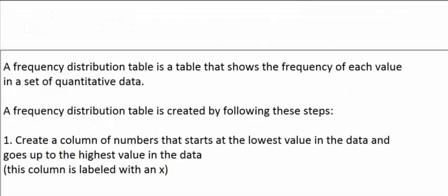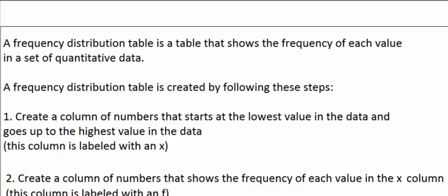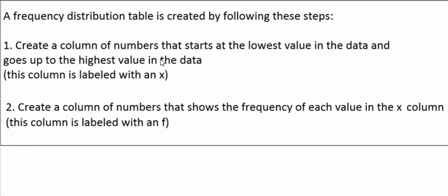Now let's talk about a frequency distribution table. A frequency distribution table is a table that shows the frequency of each value in a set of quantitative data — numbers like ages, heights, weights, incomes, rather than categories. To make a frequency distribution table, you first create a column of numbers starting at the lowest value and going all the way up to the highest value, not skipping over any numbers. That column is labeled x. Then you create a column labeled f showing the frequency of each value in the x column — f means frequency.